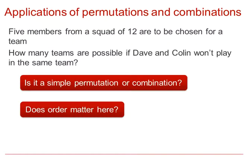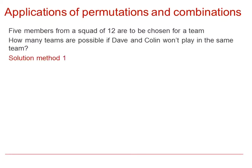For this problem, where five members from a squad of 12 are to be chosen for a team, and we want to know how many teams are possible if Dave and Colin won't play in the same team, we will look at two methods. The order doesn't matter, so it's more of a combination than a permutation, but it is not that simple.